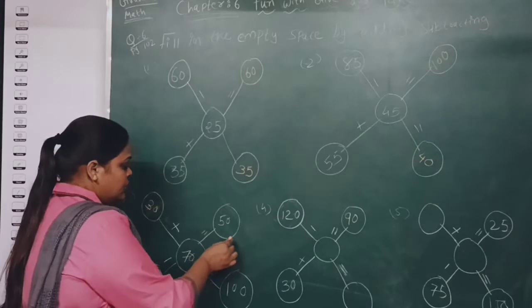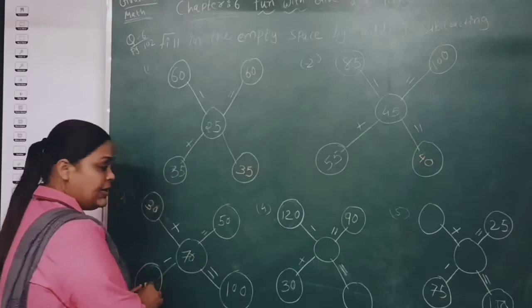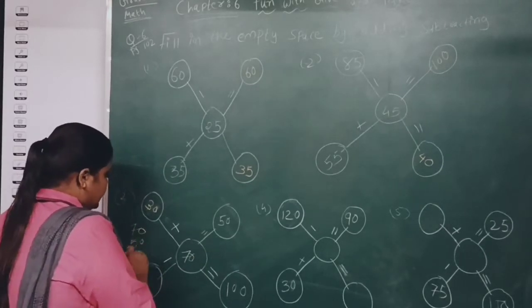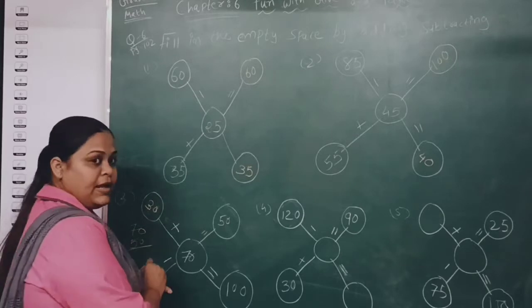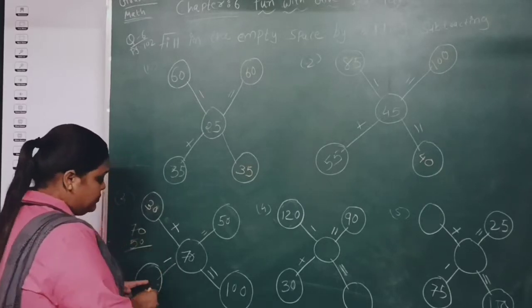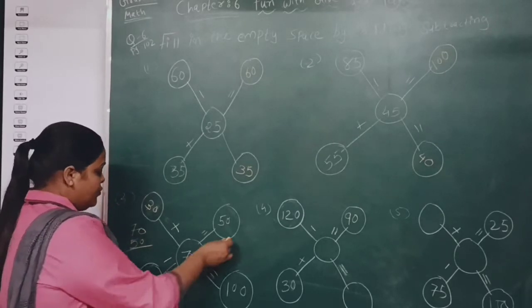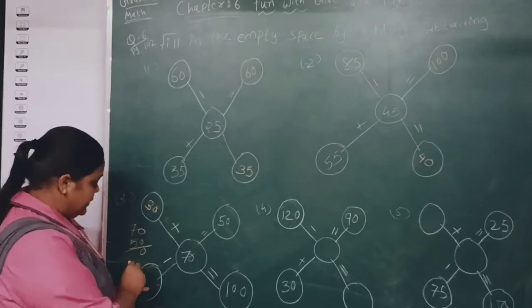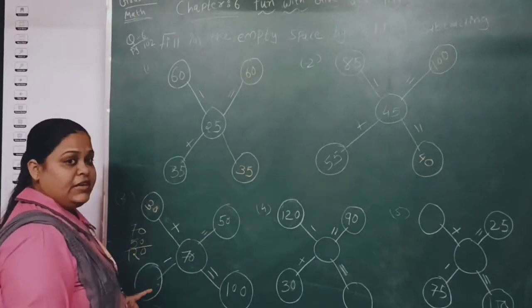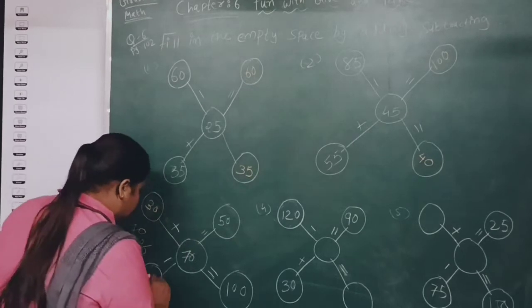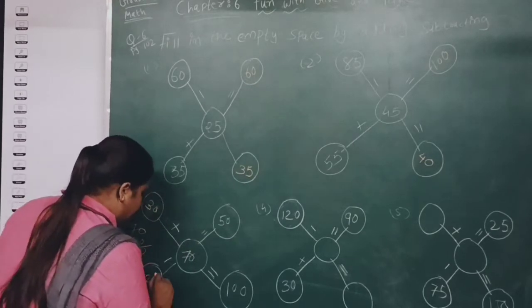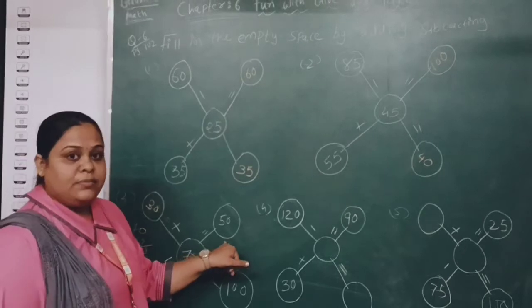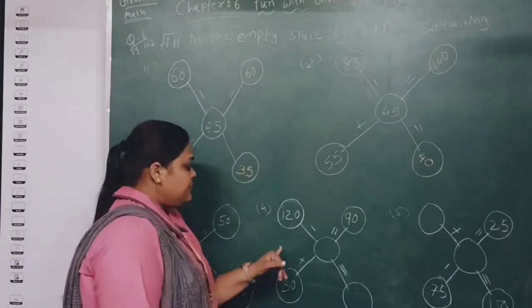When we add both numbers 70 plus 50, we get 120. So we are supposed to write 120 here. Now you can see 120 minus 70 — the answer will be 50.